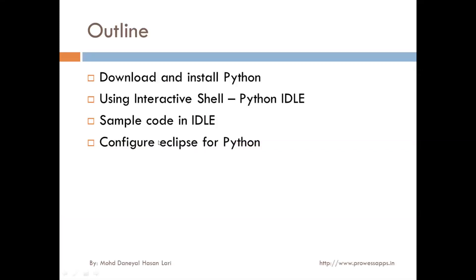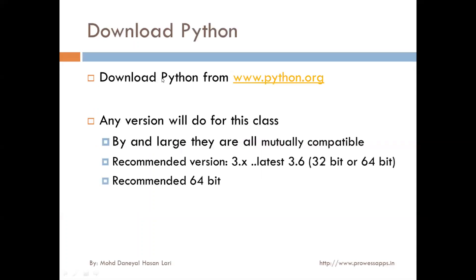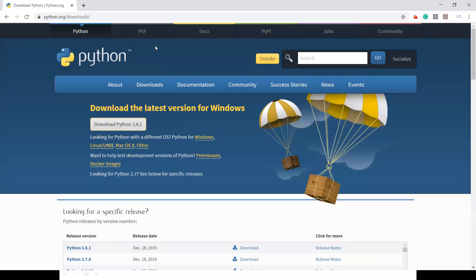There are many IDEs available in the market that you can use for Python coding, but for this whole tutorial I will use Eclipse, so I will tell you how to configure Eclipse for Python. To install Python and set up the environment, first you need to download Python from the official website python.org. Just go to the browser and navigate to python.org/downloads.